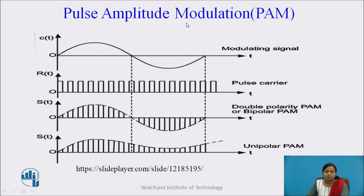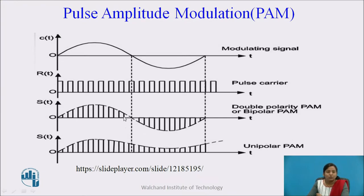In Pulse Amplitude Modulation, the modulating signal is a continuous time signal. The carrier signal is a train of pulses whose amplitude and width is constant. These train of pulses are spaced from each other by time Ts, which is called the sampling period. This train of pulses acts as a sampling function. In PAM, the amplitude of these pulses varies according to the amplitude of the continuous time signal. Depending upon how this amplitude varies, there are two types: double polarity, also called bipolar PAM, where positive as well as negative pulses are present, and unipolar PAM, where only positive pulses are present.